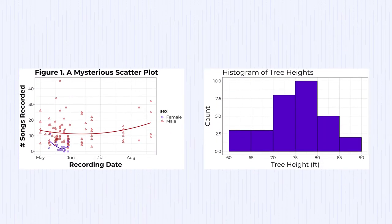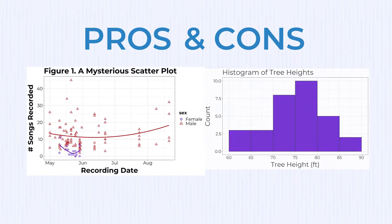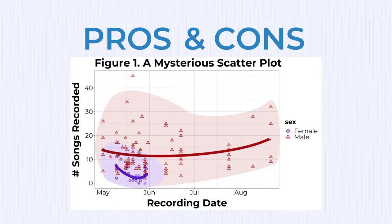There are, however, many pros and cons to each type of visualization. In the scatter plot, you can see how song rates differ between the sexes, but also how the song rates change over time. Specifically, you can see that the female stops singing after they finish laying their first clutch of eggs by the end of May.